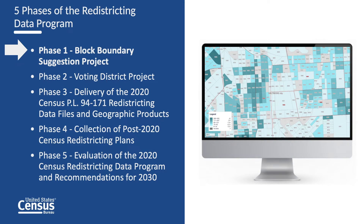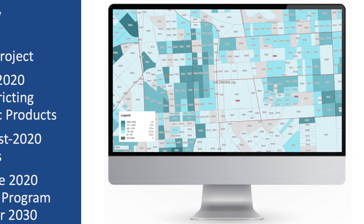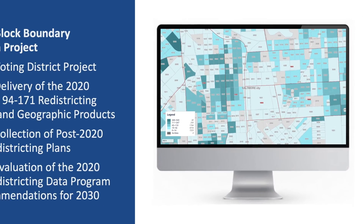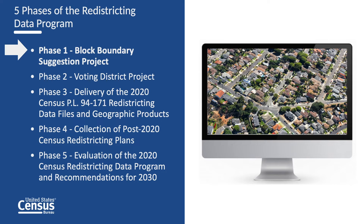The 2020 Census Redistricting Data Program has five phases. Phase 1 is the Block Boundary Suggestion Project, which provides states with the opportunity to submit their suggestions for the 2020 Census Tabulation Block Inventory. A block is the smallest geographic area for which census data are available. Blocks often use natural boundaries such as streets and rivers. Suggestions were made by designating the desirability of linear features to use as 2020 Census Tabulation Block Boundaries. States also had the opportunity to submit suggested legal boundary updates as well as updates to other geographic areas, allowing states to construct some of the small area geography they needed for legislative redistricting.